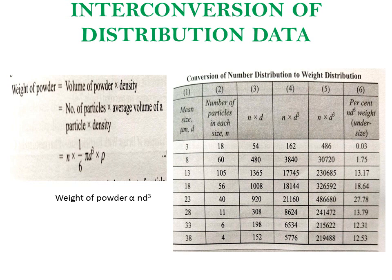Weight of powder is directly proportional to number of particles in each size multiplied by the cube of mean size, that is n × d³. In the tabular column, columns include mean size, number of particles n, then n×d, n×d², and n×d³. The last column is percentage weight under size, where you take a summation and find the percentage for each individual size. This is how number data is converted into weight data.